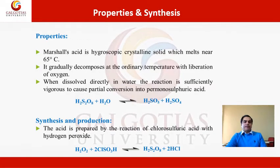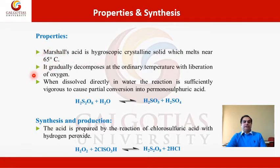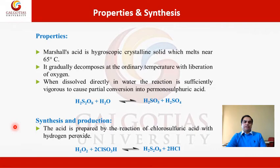Now let us discuss the properties and synthesis of Marshall's acid. Marshall's acid is a hygroscopic crystalline solid which melts near about 65 degrees centigrade. Hygroscopic materials are those that can absorb moisture. Because it is a hygroscopic crystalline solid, it melts at 65 degrees centigrade and it gradually decomposes at ordinary temperature with the liberation of oxygen. Another property: when it dissolves directly in water, it gives a vigorous reaction for partial conversion to peroxy monosulfuric acid, that is Caros acid. This acid can be prepared by the reaction of chlorosulfuric acid with hydrogen peroxide, giving Marshall's acid.